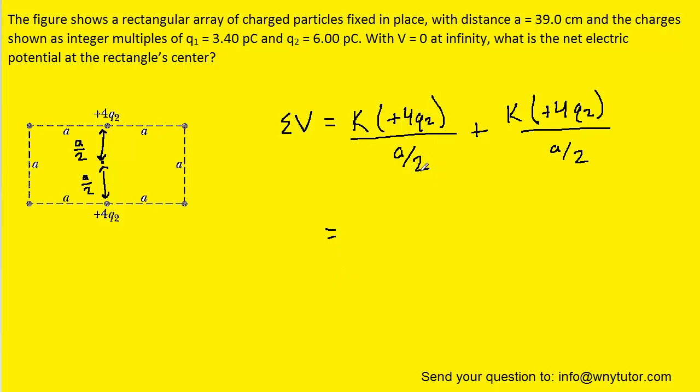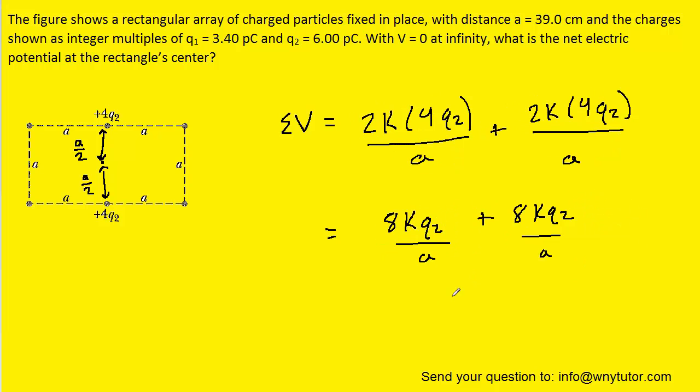And so a little algebra will bring those twos to the numerator. We can simplify the numerators by multiplying the two and the four in both cases. And since these fractions have a common denominator, we can add them together to make 16kq2 all divided by a.